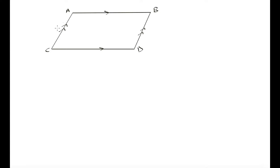Here we have a parallelogram. Side AB is parallel to side CD, and side AC is parallel to side BD. What does it mean that the diagonals of a parallelogram bisect one another, and how do we prove that?